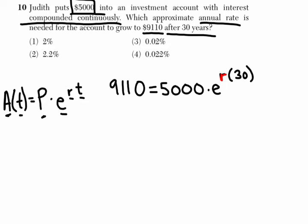First I divide both sides by $5,000. So we get $9,110 divided by $5,000. And that's going to equal E to the power of 30R, or R times 30.